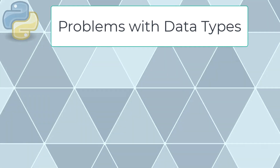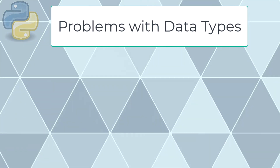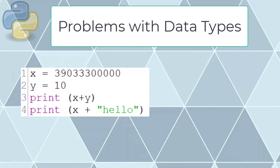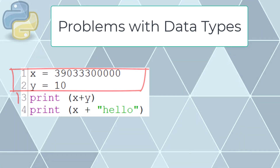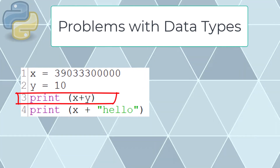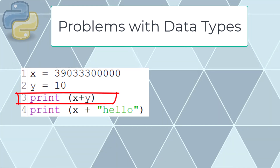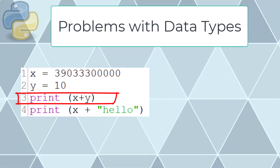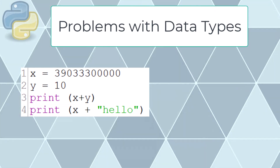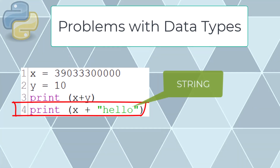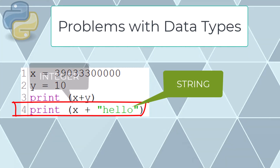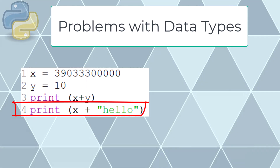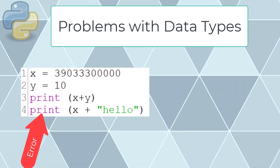There are problems with data types, particularly when mixing variables of different types. For example, we set x and y to integer values. On line 3, both x and y are added together and the result output — this works because they are both the same family data type (both numbers). However, line 4 is incorrect: 'hello' is a string and x is an integer — they are not the same family, so this returns an error when run.